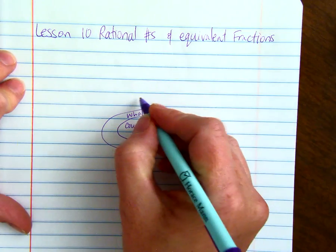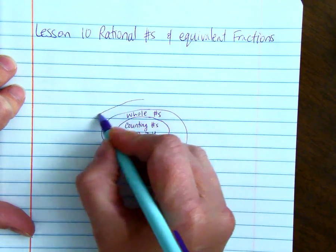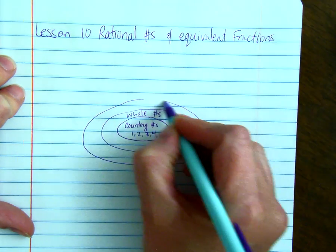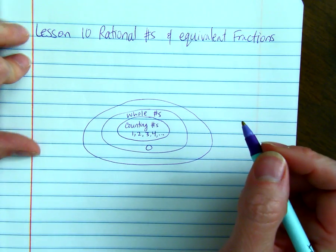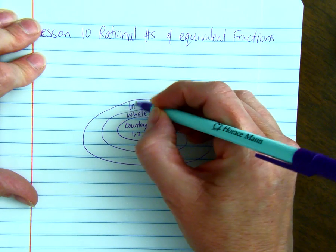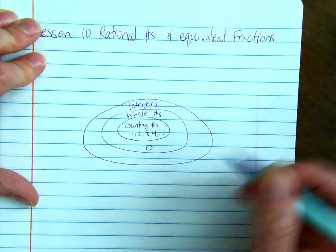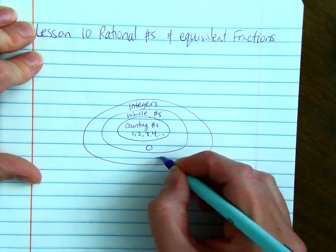Then if you add the negative numbers in, the opposite of the counting numbers, those are called integers, and we'll just add the negatives.